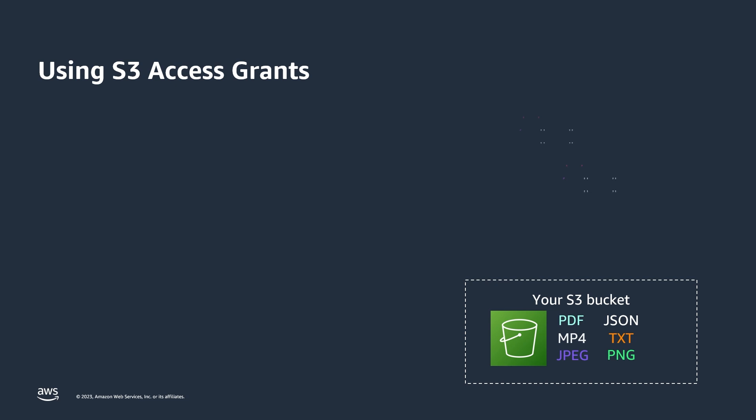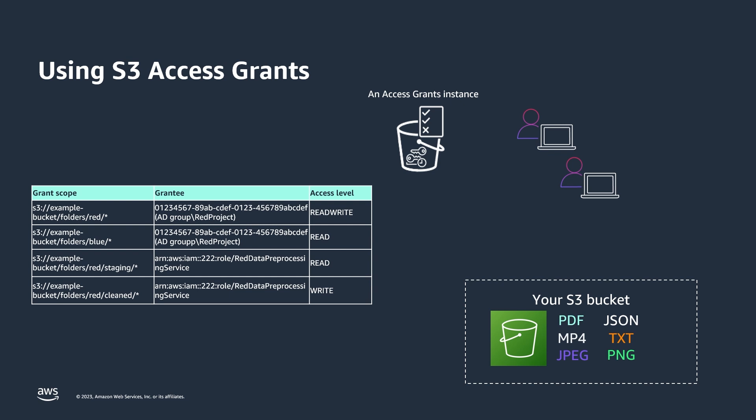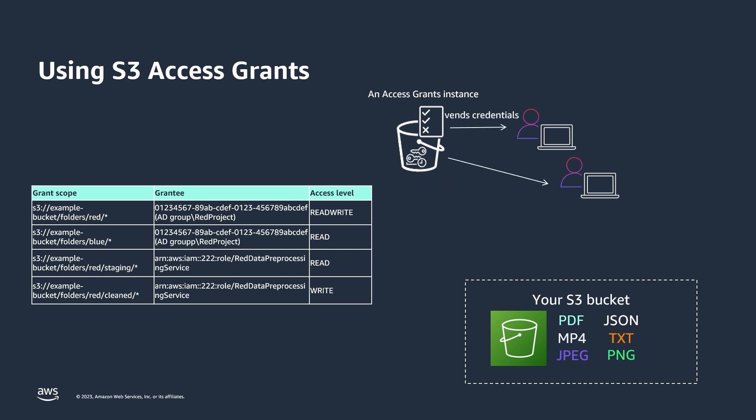To use S3 Access Grants, the first thing you do is create an access grants instance. This instance is a logical grouping of all the grants and permissions you will store. Once you create an instance, you start registering grants specifying who can have what level of access to what — whether it's an AD group, users, Okta users, or IAM principals — and what level of access, whether it's read, write, or readwrite, to what S3 data. Once you configure the grants, when users and applications access S3, they first talk to the access grants instance to request access via the Get Data Access API. If the request is authorized, access grants vends back temporary credentials, which the users and applications then use to access S3.